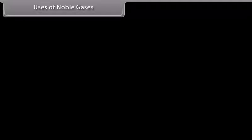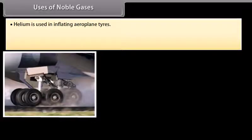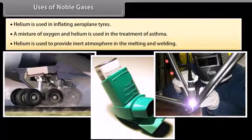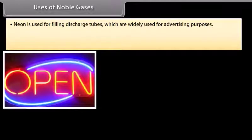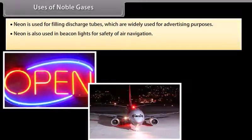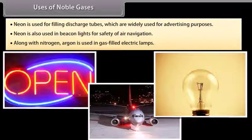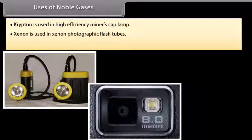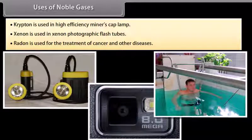Uses of noble gases: Because of the lightness of helium, it is used in inflating aeroplane tyres. A mixture of oxygen and helium is used in the treatment of asthma. Helium is used to provide an inert atmosphere in melting and welding. Neon is used for filling discharge tubes with characteristic colours, widely used for advertising purposes, and in beacon lights for safety of air navigation as its light has fog and storm penetrating power. Argon, along with nitrogen, is used in gas-filled electric lamps as argon is more inert than nitrogen. Krypton is used in high-efficiency lamps, xenon in photographic flash tubes, and radon in the treatment of cancer and other diseases.